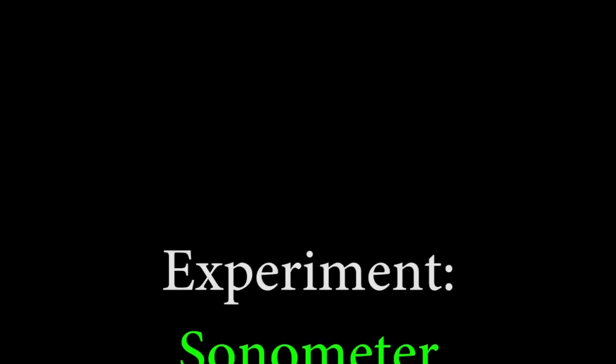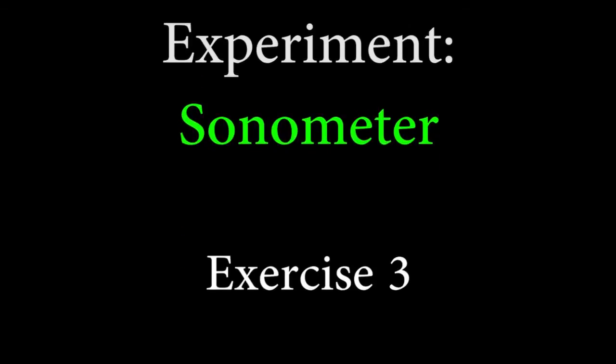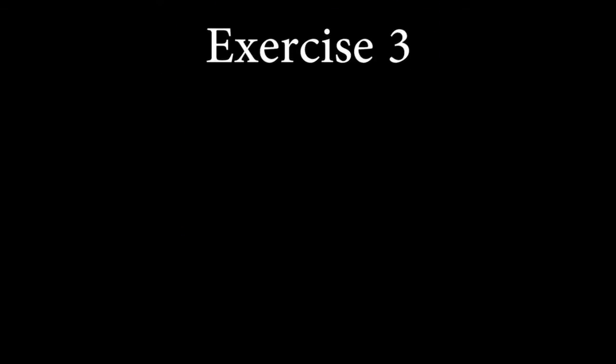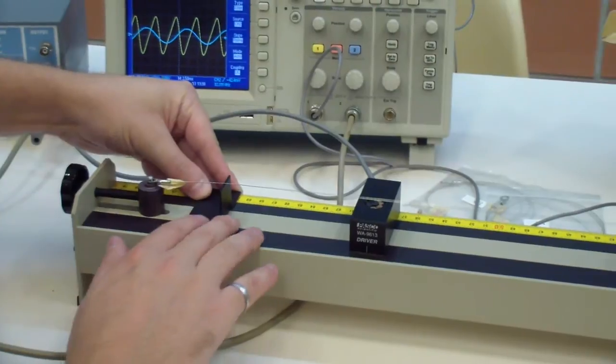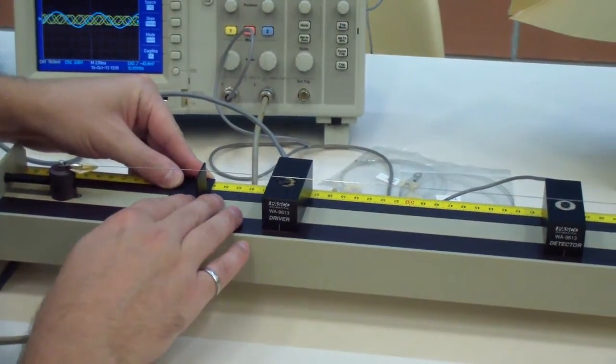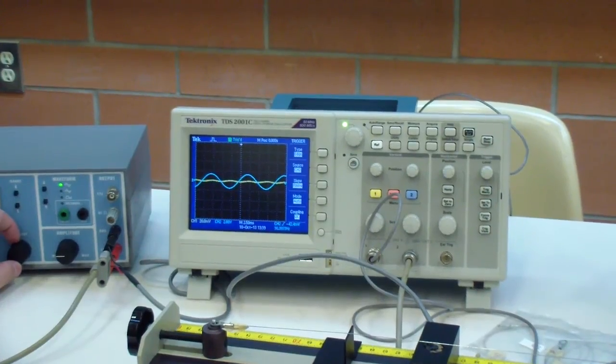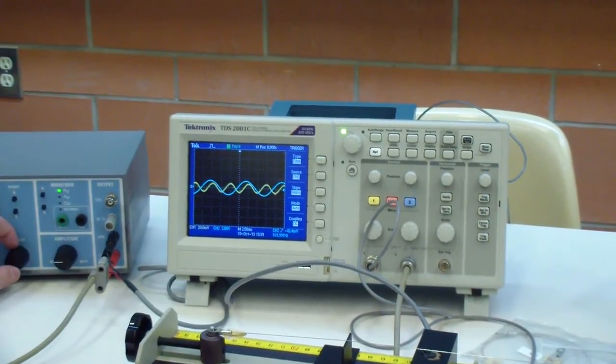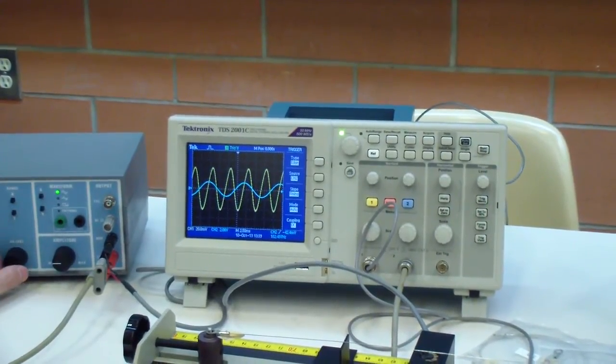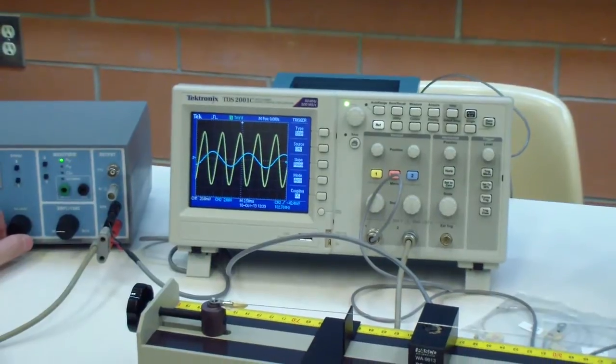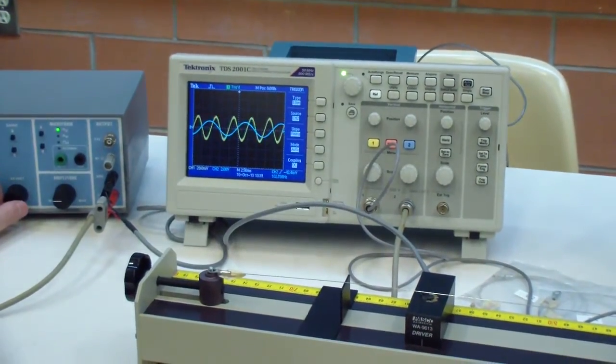In exercise 3, we'll be changing the length of the wire and observing the effect on the particular harmonic. Change the effective length of the string by moving one or both of the bridges. Again, pick a particular harmonic and measure its new resonant frequency at several different effective string lengths. Make sure to get enough points to construct a reasonable graph.